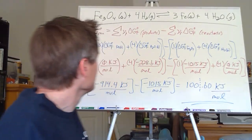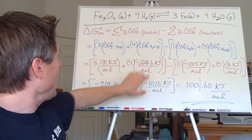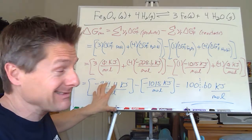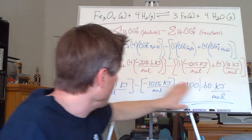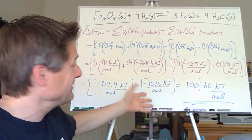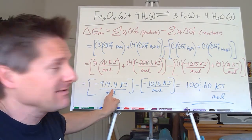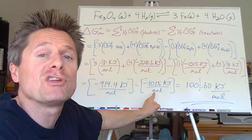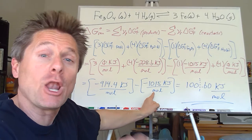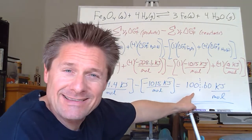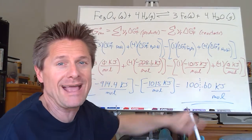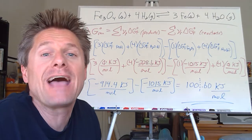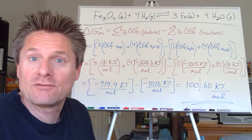Four times negative 228.6 gives negative 914.4 kJ/mol for our products. Fe₃O₄ has a Gibbs energy of formation of negative 1015 kJ/mol from the table — that's a less common one. Hydrogen gas is zero. So subtracting: negative 914.4 minus negative 1015 gives positive 100.6 kJ/mol. We're limited to the ones place by the largest absolute uncertainty. That gives us delta G° = +100.6 kJ/mol.